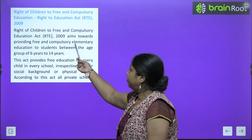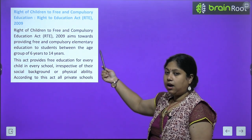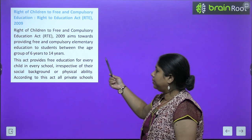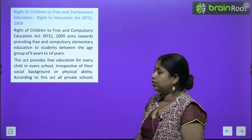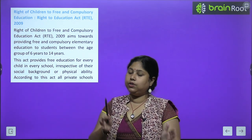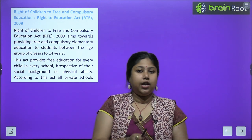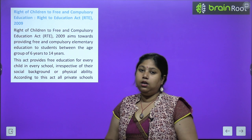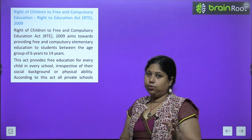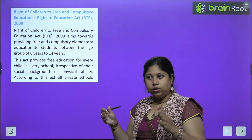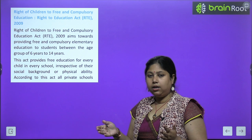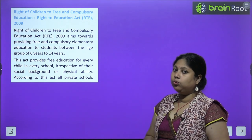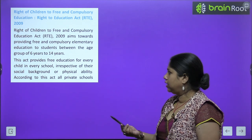Right to Children to Free and Compulsory Education — RTE — was launched in 2009. It aims to provide free and compulsory elementary education to students between the age group of 6 to 14 years. Whether they are poor or not, if they don't have money, free and compulsory education will be provided. Several schemes have been launched in government schools for this purpose.